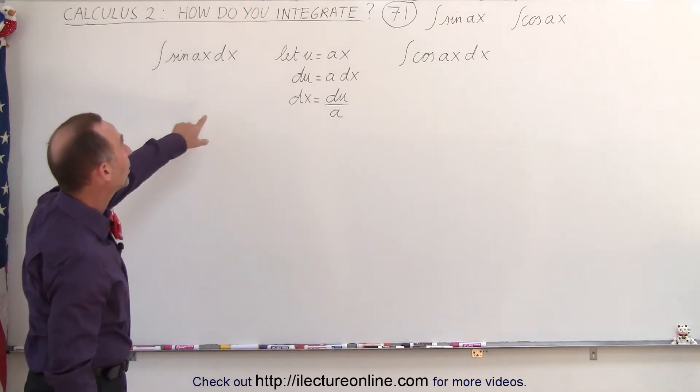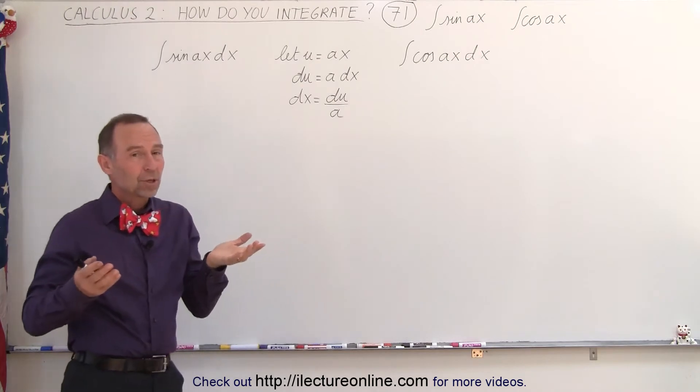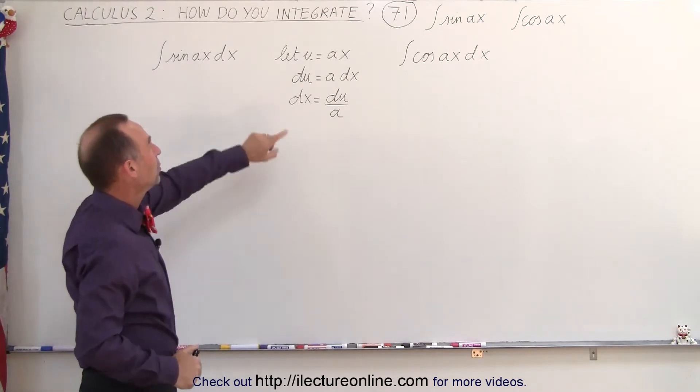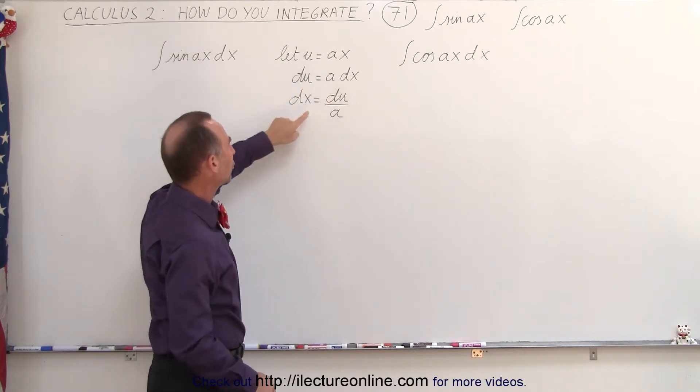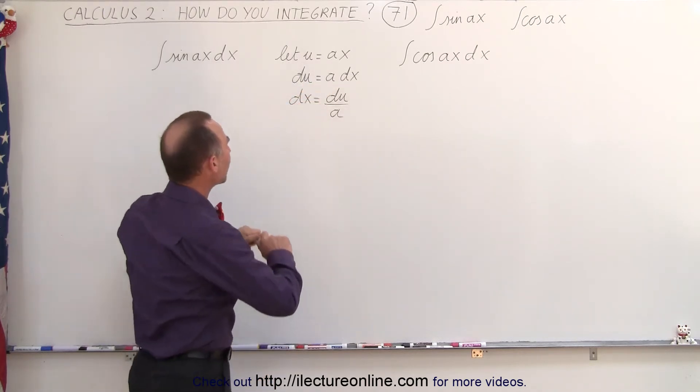The best way to do this is, well actually, you can do it in two different ways. You can say let u equals Ax, and then of course du is equal to Adx, or dx equals du over A.